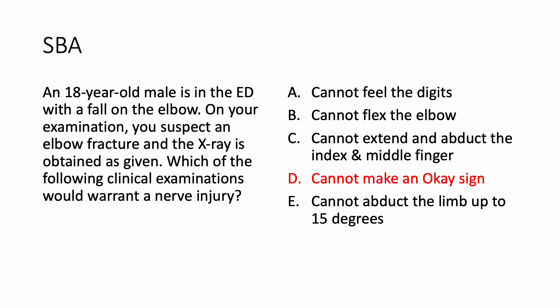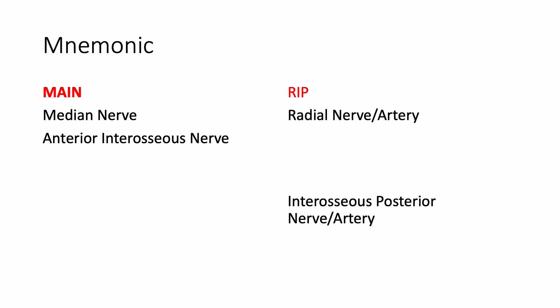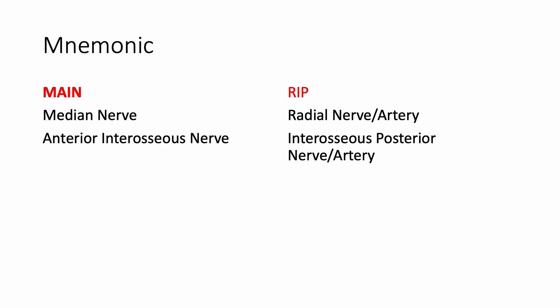So the answer choice here was: cannot make an okay sign. If you got this correct, well done. If you didn't, at least now you know that rather than selecting the median nerve, you need to select the branch — which is the anterior interosseous nerve. Some mnemonics before we finish: MAIN — median nerve, anterior interosseous nerve. And RIP — radial nerve or radial artery, and its branch is posterior interosseous nerve or posterior interosseous artery. Anterior interosseous artery is a branch of the remaining one — that's the ulnar artery.